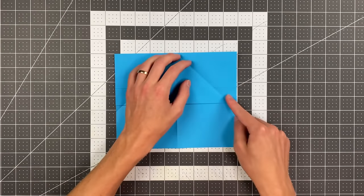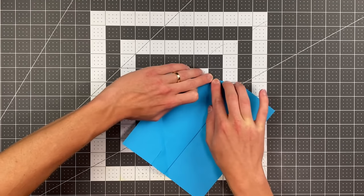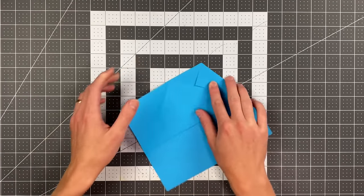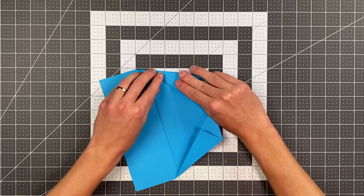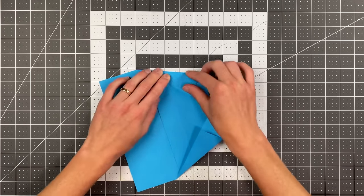I'm going to fold this edge here into the diagonal crease. I'll leave just a tiny little gap there which will help with the next step. I'll do the same thing on this side. Again I just leave a tiny gap between the edge of this layer and that crease.